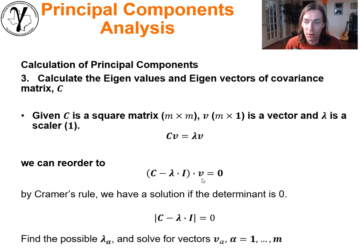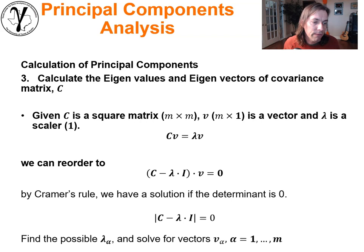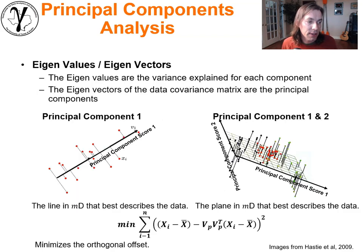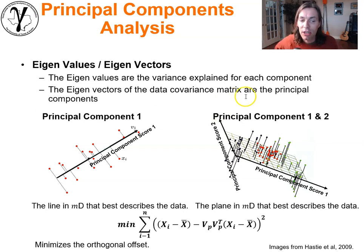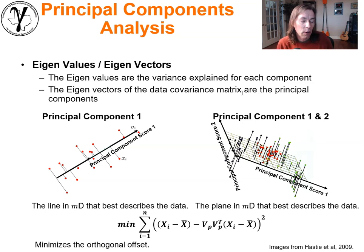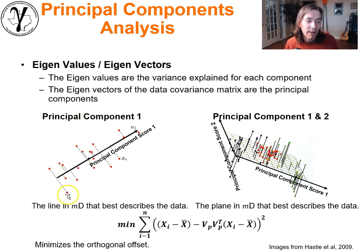This is super powerful because we can then solve for our principal components. The eigenvalues represent the variance explained for each component, and the eigenvectors of the data covariance matrix are the principal components. If we imagine data in some higher-dimensional space and construct the first eigenvector, it would be a line in m dimensions that best describes the data.